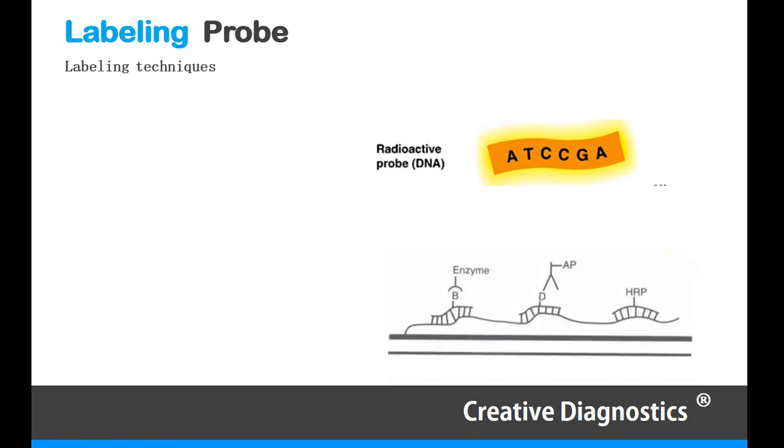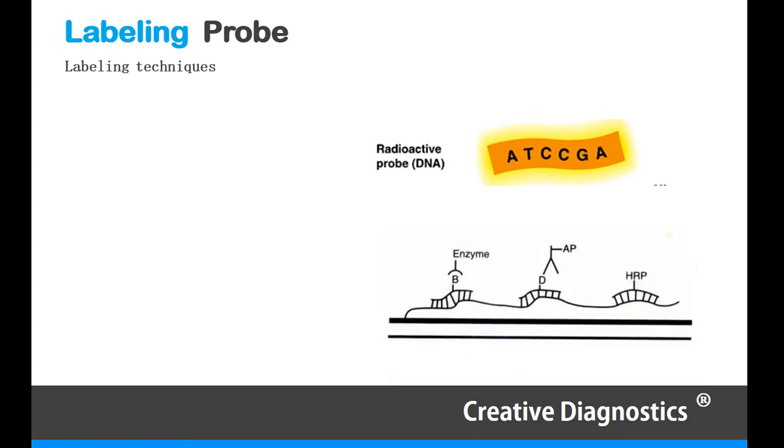To see where the probe has bound within your cells or tissue section, you must attach a label to the probe before hybridization. There are a variety of labeling techniques which can be divided into two types: radioactive isotopes and non-radioactive labels.